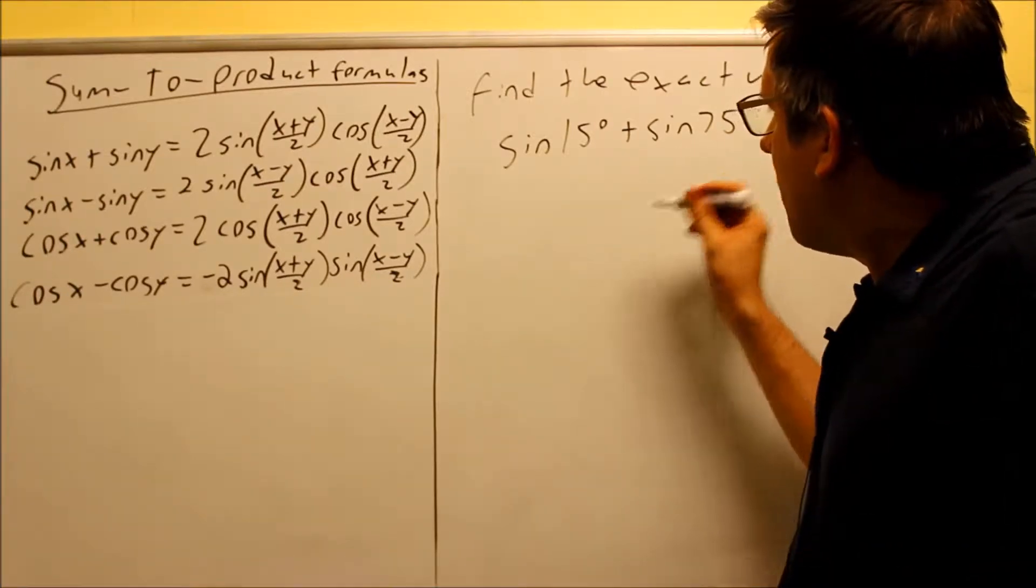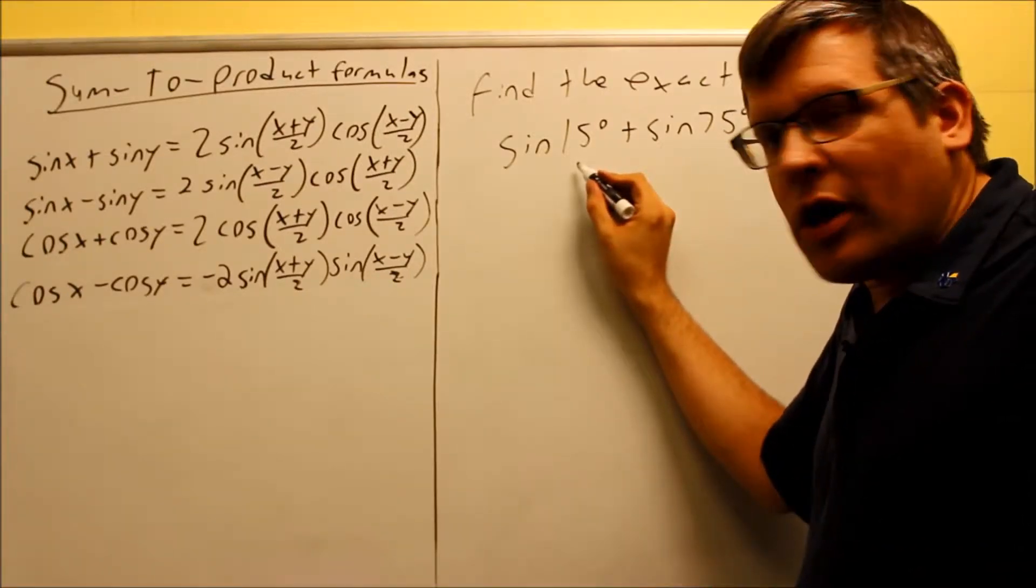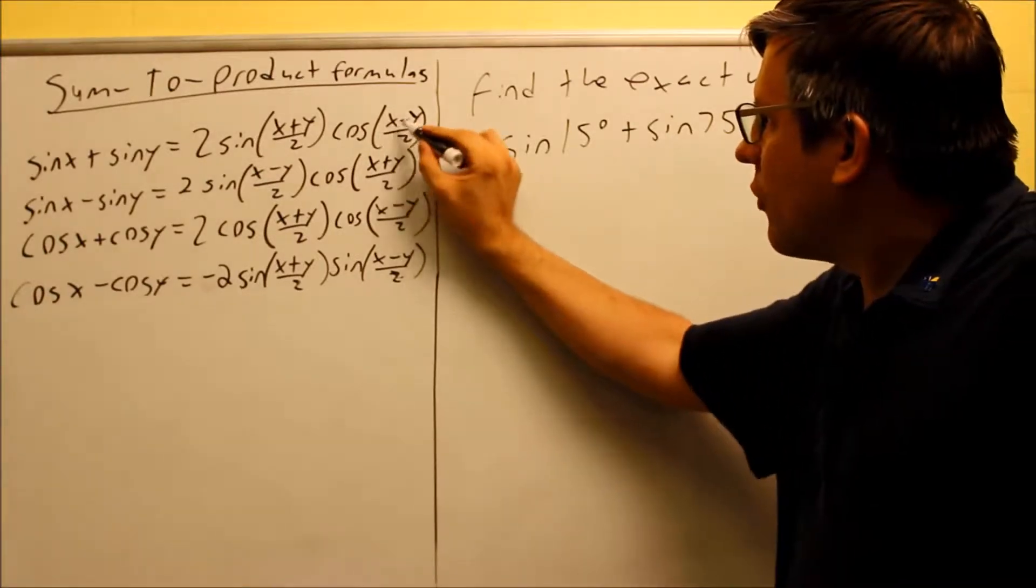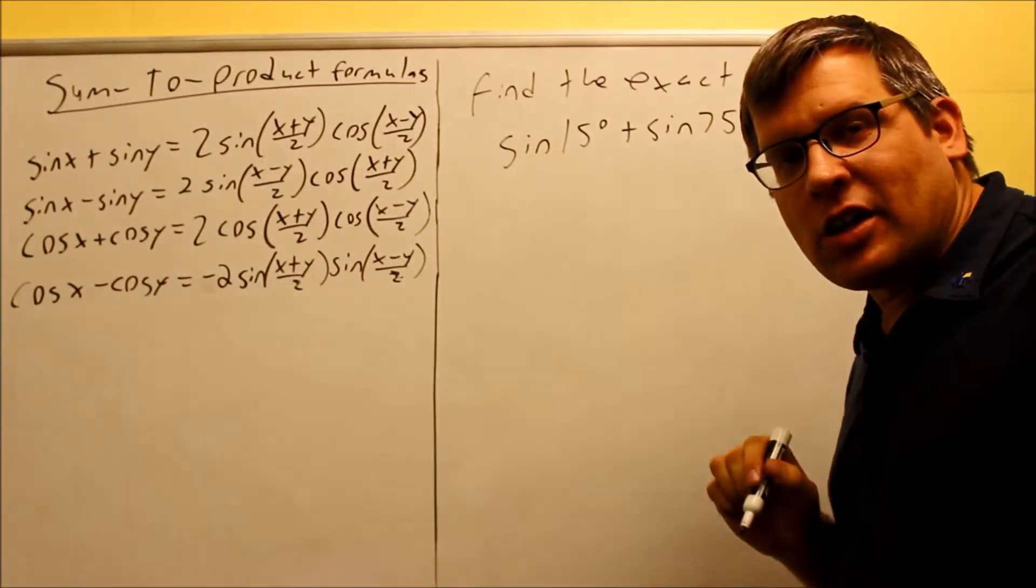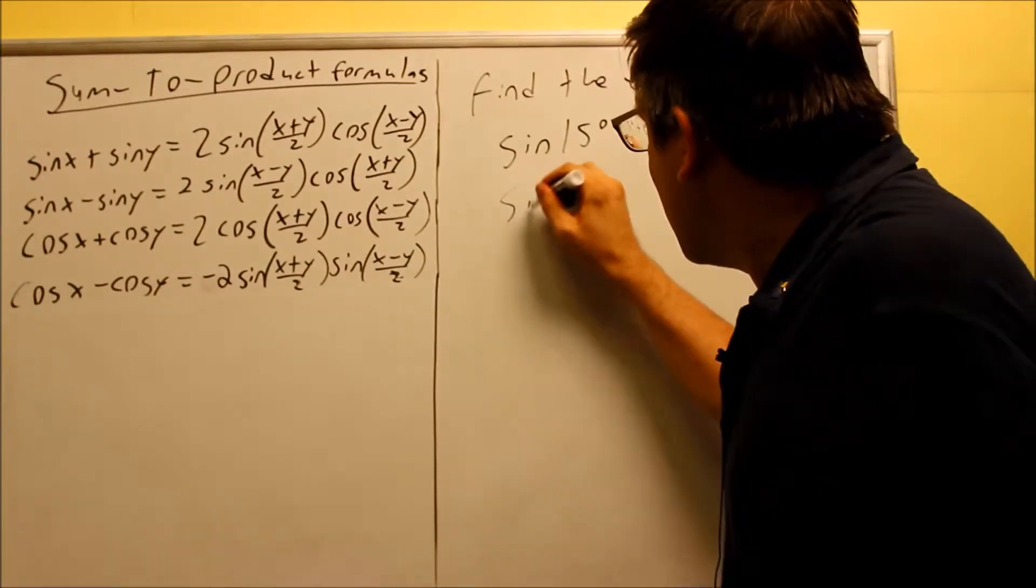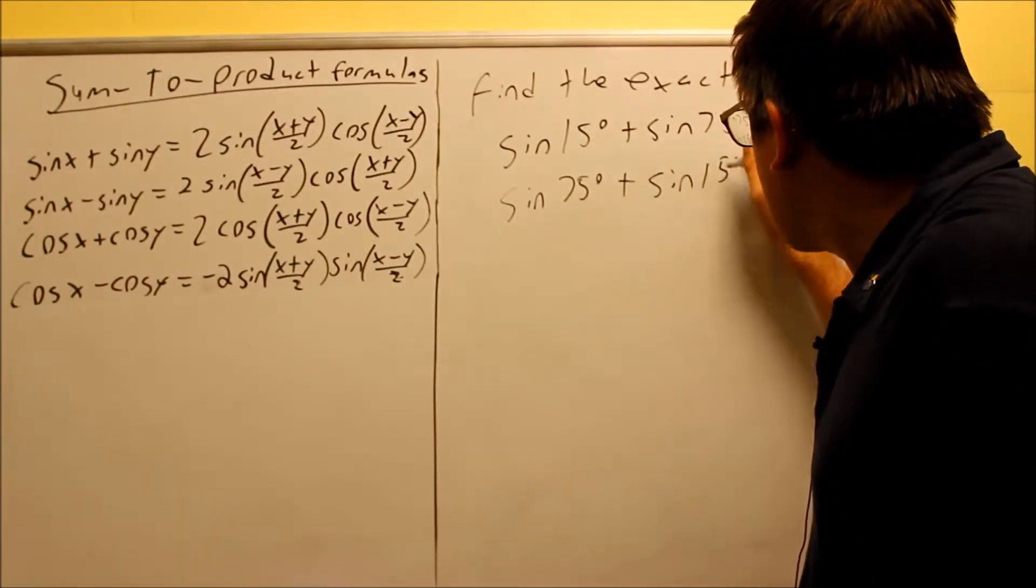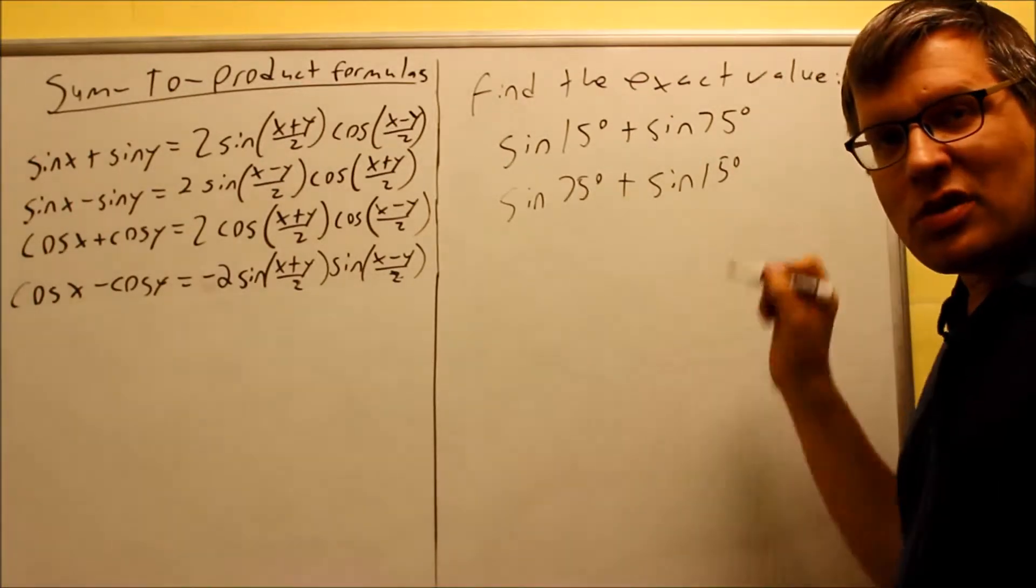In this case, I could let the 15 degrees equal x and the 75 equal y. However, in this part of the formula, I'm subtracting it, I'd get a negative angle. So instead, I'm going to switch the order and do it this way: sine 75 plus sine 15.